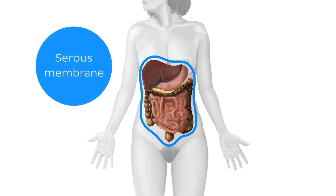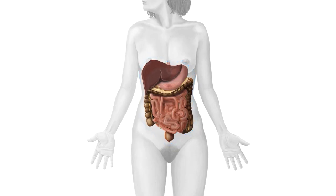Serous membranes line several body cavities where they secrete lubricating serous fluid to reduce friction from movement of muscles. In this tutorial, we're going to talk about the peritoneum and its relation to organs in the abdomen and the pelvis.